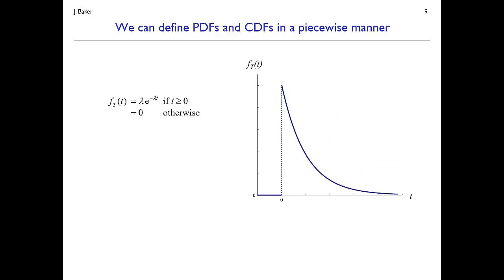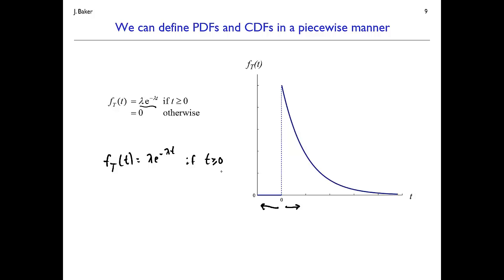PDFs and CDFs can also be defined piecewise — they don't have to be represented by a single function and don't have to be continuous. For example, a PDF for t could be defined as having some equation for t greater than or equal to 0, and 0 otherwise. Graphically, values of t less than 0 have 0 probability density, while for t greater than 0 there's some density with a discontinuity in the middle. By shorthand, we often just write the PDF as lambda e to the minus lambda t for t greater than or equal to 0, leaving it implicit that it's 0 elsewhere.